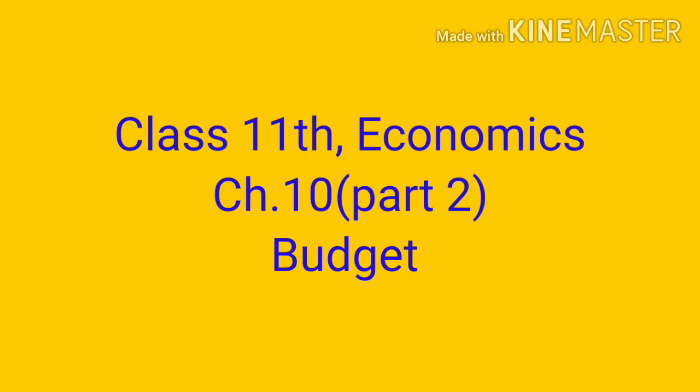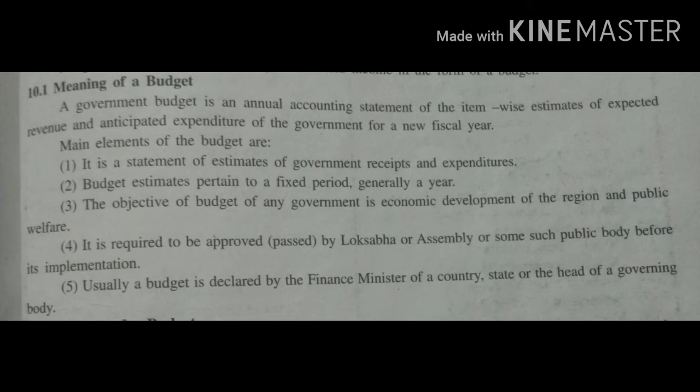Let us continue with chapter 10 budget. Today we will be learning the meaning and the purpose of a budget. A government budget is an annual accounting statement of item-wise estimates of expected revenue and anticipated expenditure of the government for a new financial year.